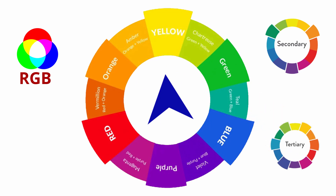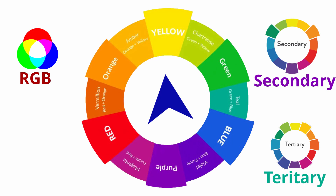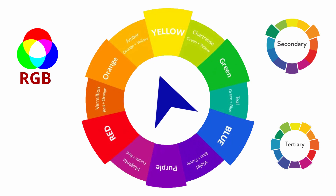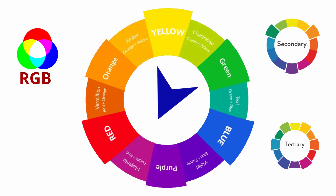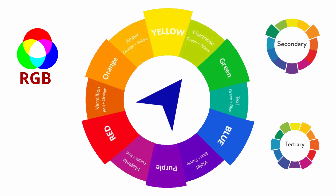The tertiary colors in the YRB system are created by mixing primary and secondary colors. The colors are named by stating the primary first, followed by the secondary: yellow-orange, red-orange, red-violet, blue-violet, blue-green, and yellow-green.